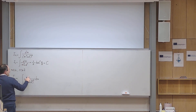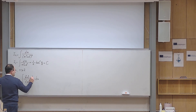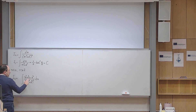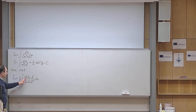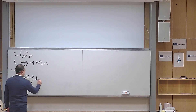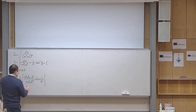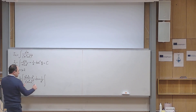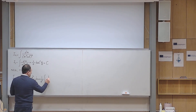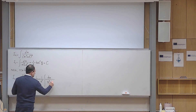Instead of having 1 in the numerator, I write it in a slightly fancy way: x squared plus a squared minus x squared. Then x squared and x squared cancel, leaving a squared — but my goal is to have 1, so I divide by a squared to compensate. I can then split this into two integrals: one with x squared plus a squared to the power of n minus 1 in the denominator, and one with x squared over x squared plus a squared to the power of n.